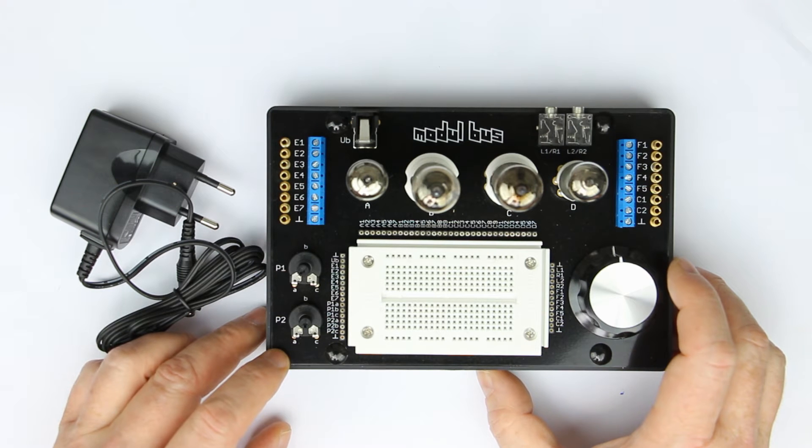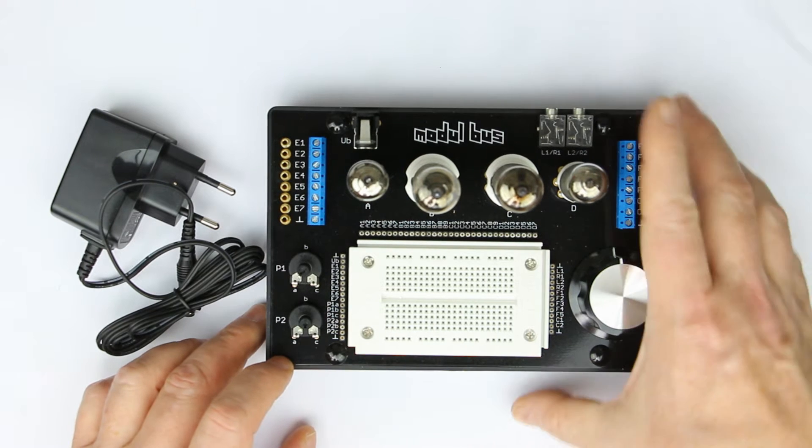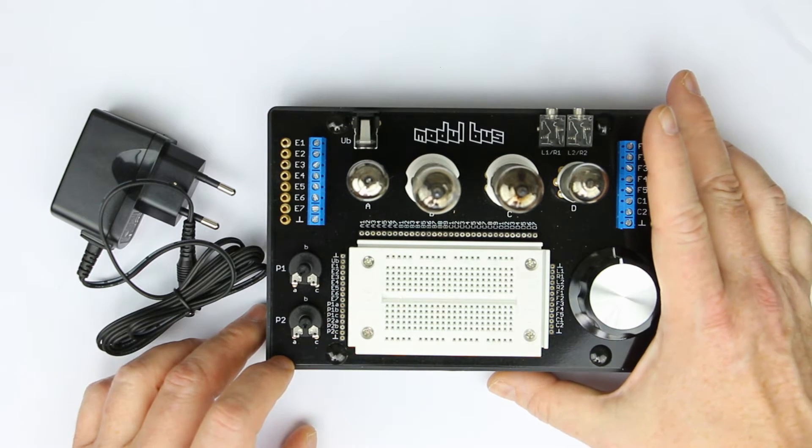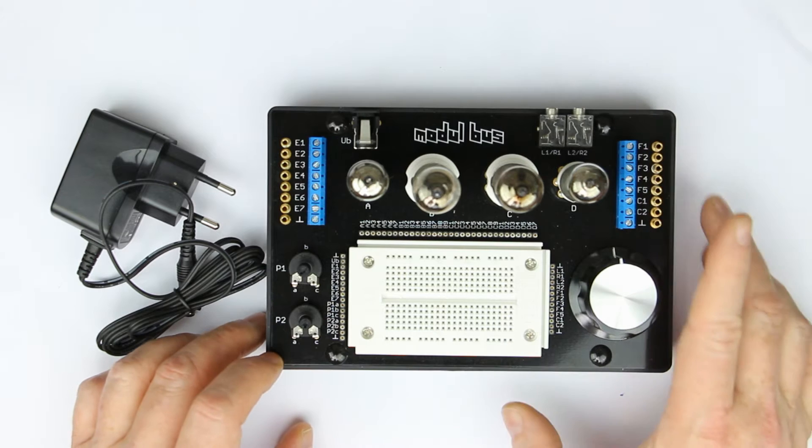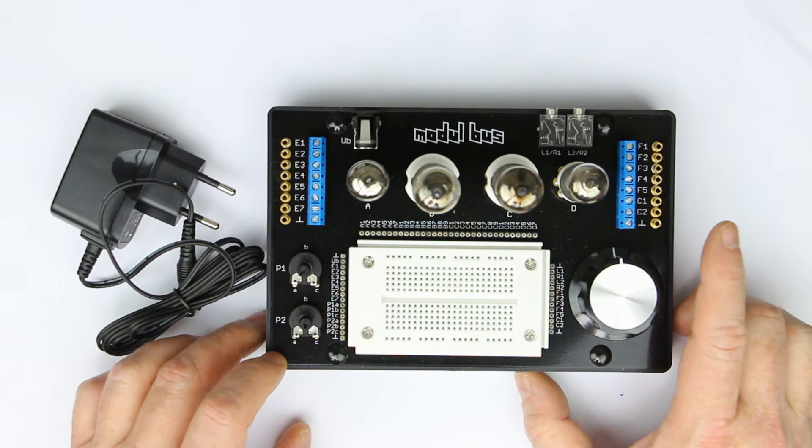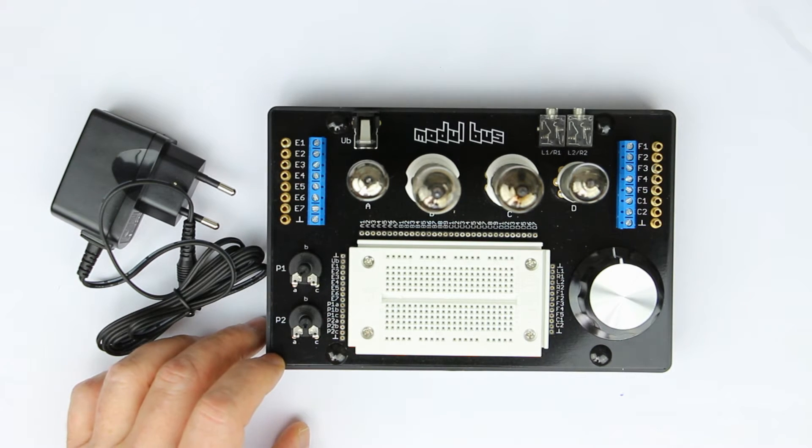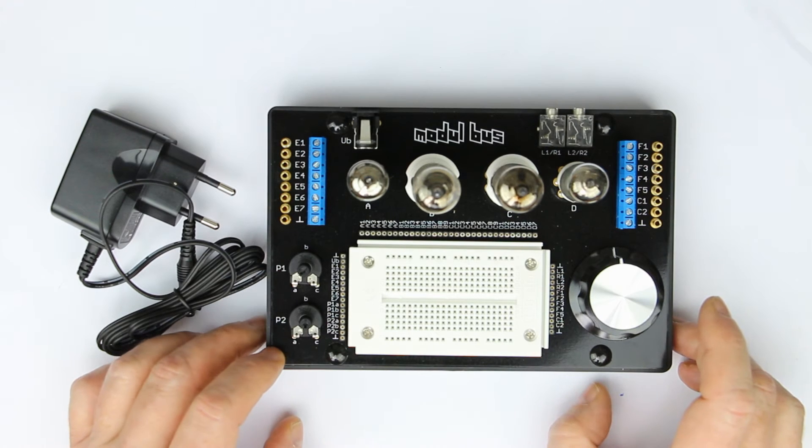In this first part of this two or three part series, we'll take a look at the whole problem of RFI or EMI interference, which is the abbreviation for electromagnetic interference or radio frequency interference.